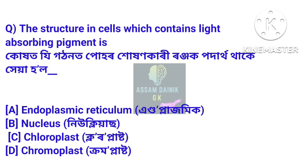The structure in cells which contains light-absorbing pigment is called chloroplast. The chloroplast is the organelle that contains light-absorbing pigment.